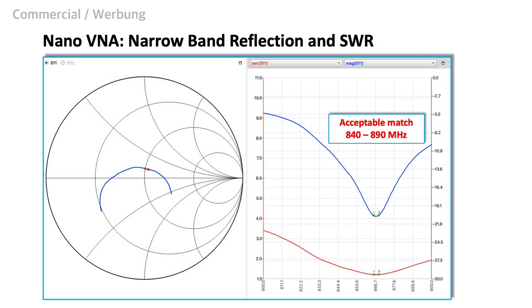I used my nano vector network analyzer to adjust the resonance frequency, which did a good job here, especially together with the software. Thanks to the software, I can store calibrations and measurements. This helps a lot to work with the nano VNA, because the user interface from the device itself confuses me completely.